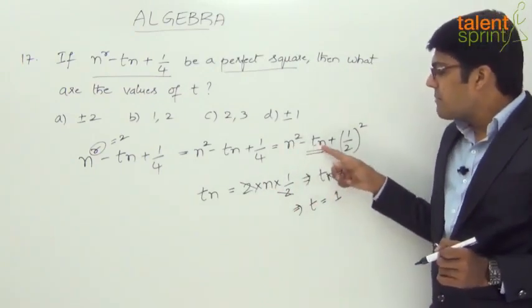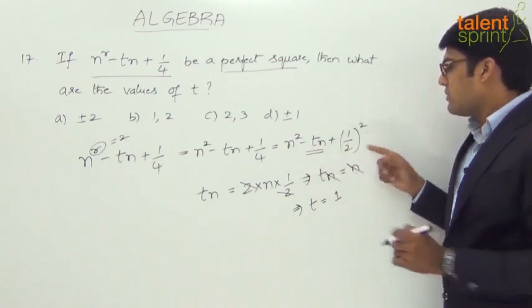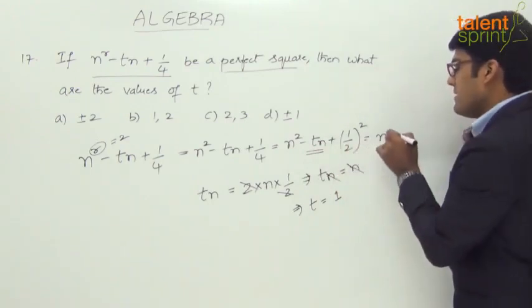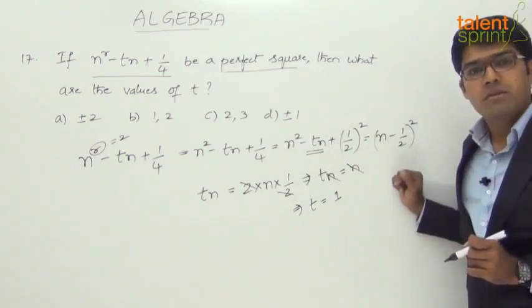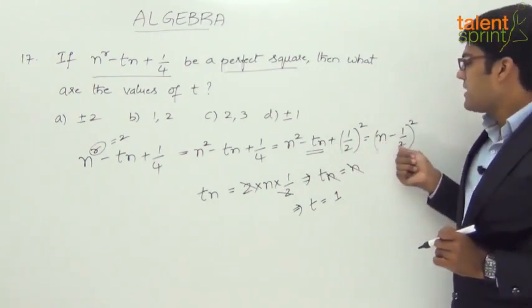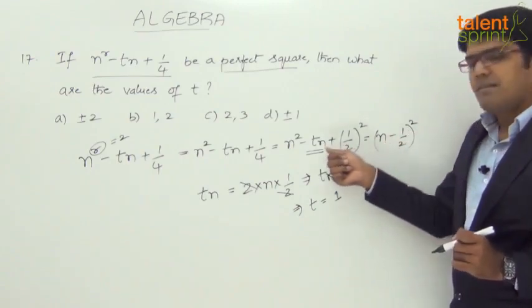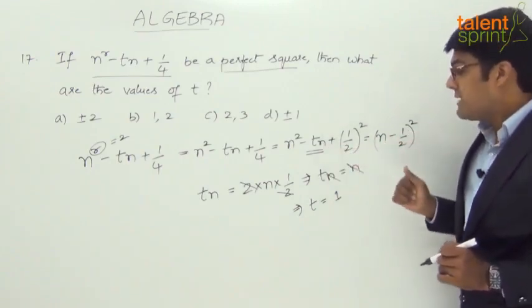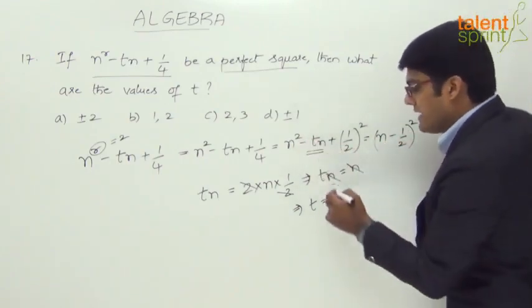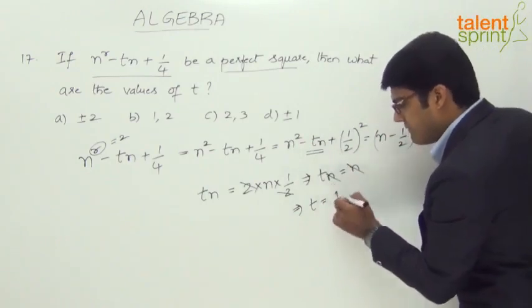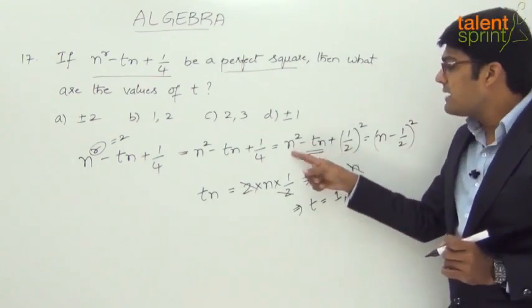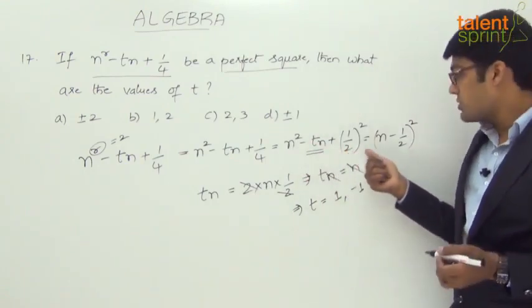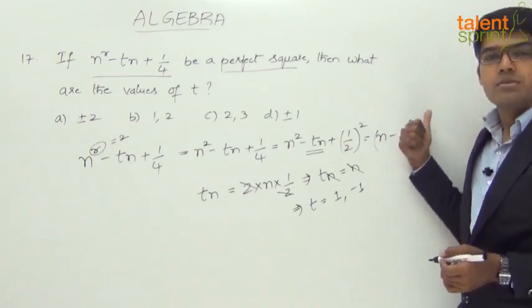So by taking t equals 1, what do we get? n^2 minus n plus 1/4, which is like (n minus 1/2) whole square. But at the same time, even if we take minus 1, let's say if we take t equals minus 1, what happens? It becomes n^2 plus n plus 1/4, which also is like (n plus 1/2) whole square.